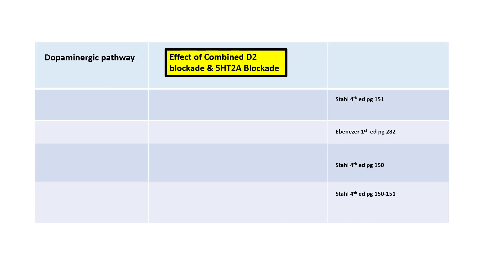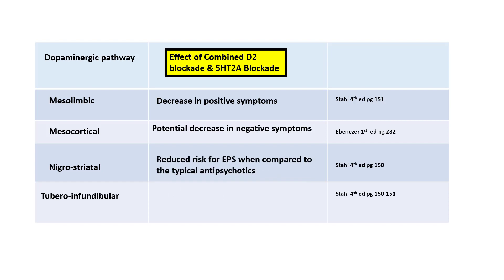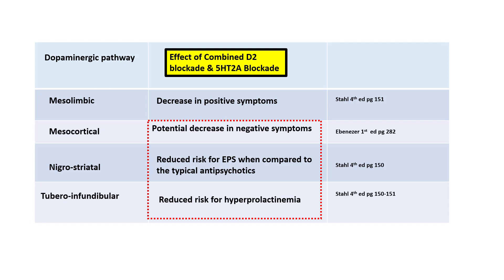When we block both D2 and 5HT2A receptors across the dopaminergic pathways: in the mesolimbic pathway positive symptoms reduce; in the mesocortical pathway there is a potential decrease in negative symptoms; in the nigrostriatal pathway there is reduced risk for extrapyramidal symptoms compared to typical antipsychotics; and in the tuberoinfundibular pathway there is a very reduced risk for hyperprolactinemia. These are the advantages of second-generation or atypical antipsychotics over first-generation typical agents.